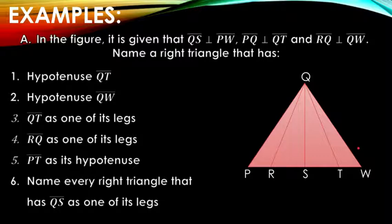Let's have an example. In the figure, it is given that line QS is perpendicular to line PW, line PQ is perpendicular to line QT, and line RQ is perpendicular to line QW.